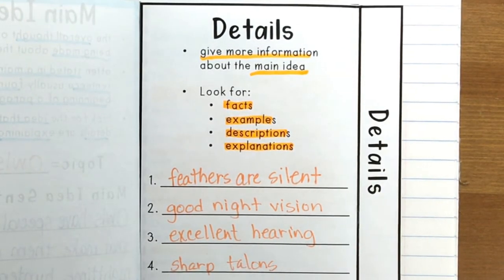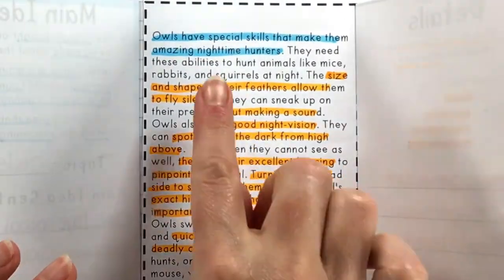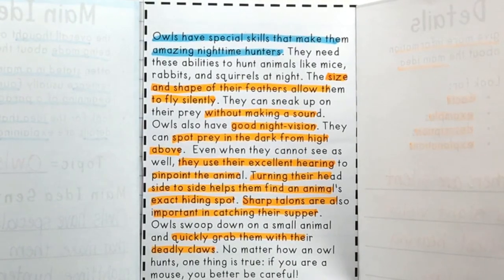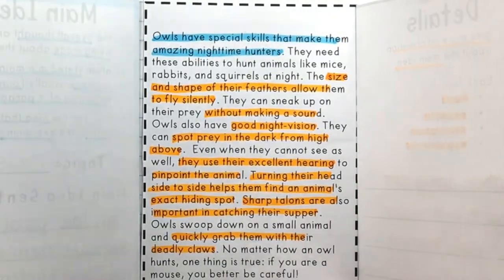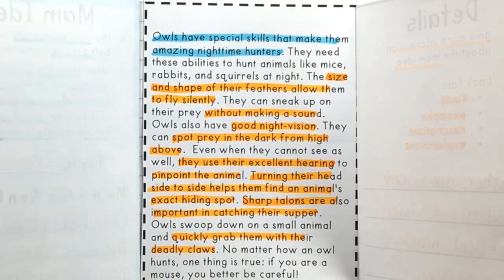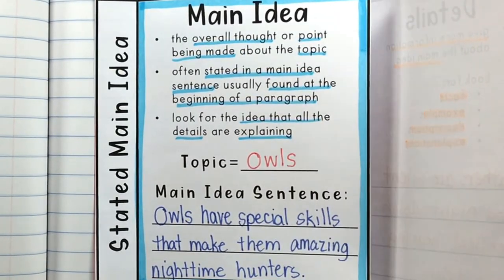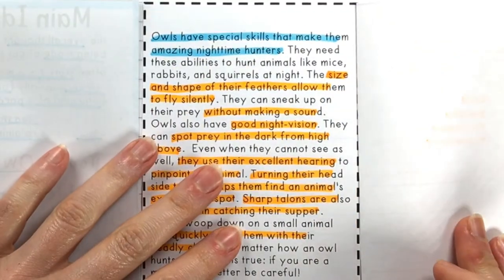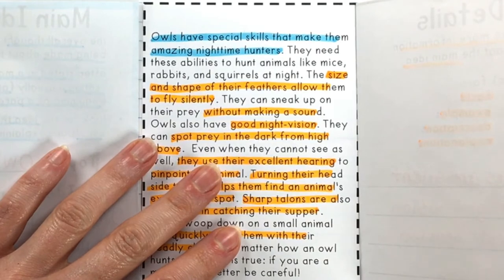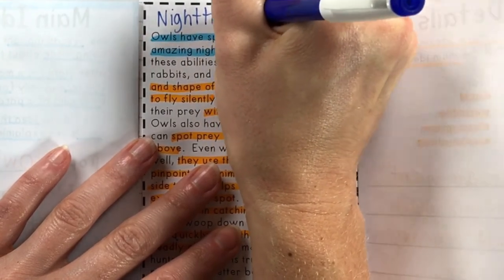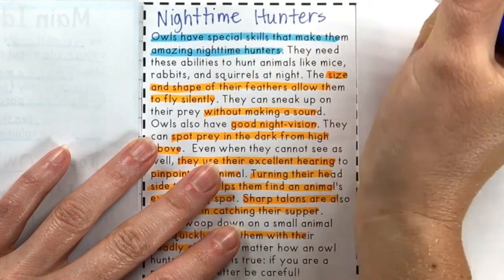Now we've got one more thing to do. You may have noticed there's no title for this paragraph. Sometimes a title can help you understand what the paragraph is going to be about. The title is usually focused on the main idea but given in just a few words. We're going to come up with a title — 'Owls have special skills that make them amazing nighttime hunters' is too long, so we'll focus on the fact that they are hunting at night and call this paragraph 'Nighttime Hunters.' Then we know when it's happening, what's happening, and that some animal is doing it.